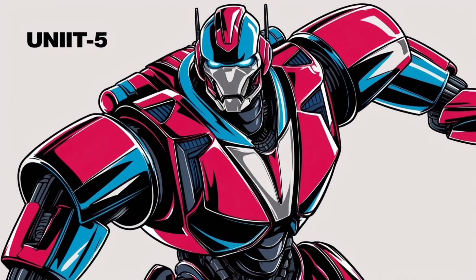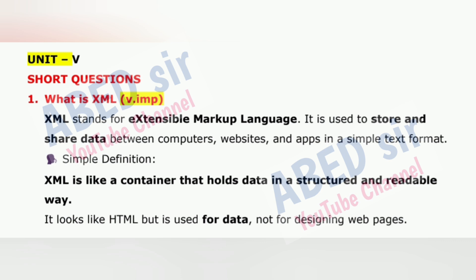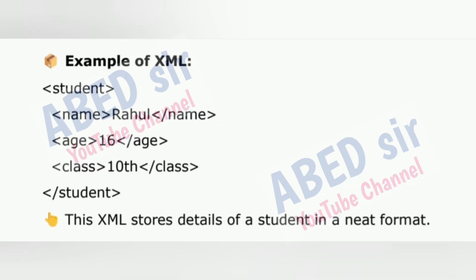Unit 5, the important short question is: What is XML? XML stands for Extensible Markup Language. It is used to store and share data between computers, websites and apps in a simple text format. XML is like a container that holds data in a structured and readable way. It looks like HTML but is used for data, not for designing web pages. Example of XML: Student, Name Rahul, Age 16, Class 10th. This XML stores details of a student in a neat format.